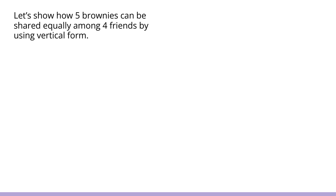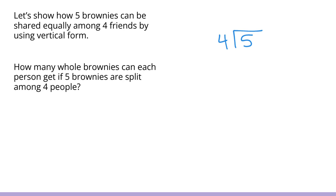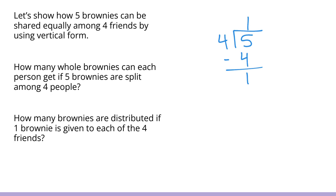Now let's show how five brownies can be shared equally among four friends by using vertical form. In vertical form, I want us to remember that our dividend is inside the vertical form, and then what we are dividing by is outside. So we have five divided by four. How many whole brownies can each person get if five brownies are split among four people? That would be one full brownie. And then if I subtract out those four brownies, I would get one brownie left. So we have four brownies distributed if one brownie is given to each of the four friends. And we would have that one brownie left.